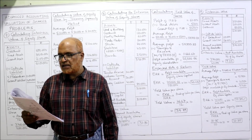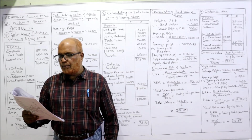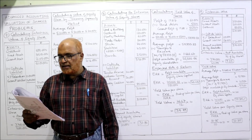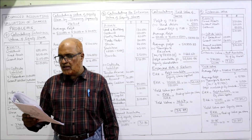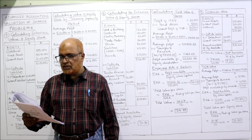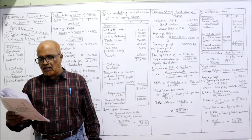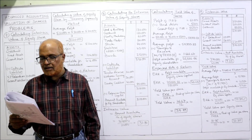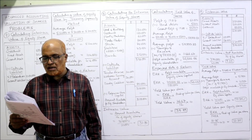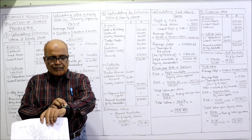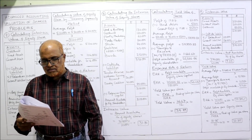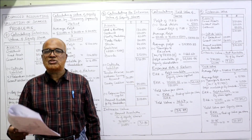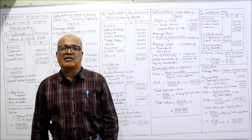Share capital: 1 lakh. Reserves and surplus: 80,000. Trade payable: 40,000. Short term provision: 40,000. Asset side — tangible assets: 1,40,000; intangible assets — trademark: 20,000; other non-current assets — preliminary expenses: 7,000 (ignore preliminary expenses). Current assets: inventories, trade receivable, cash and bank balance — cash and cash equivalent: 25,000. Total of the balance sheet: 2,60,000.